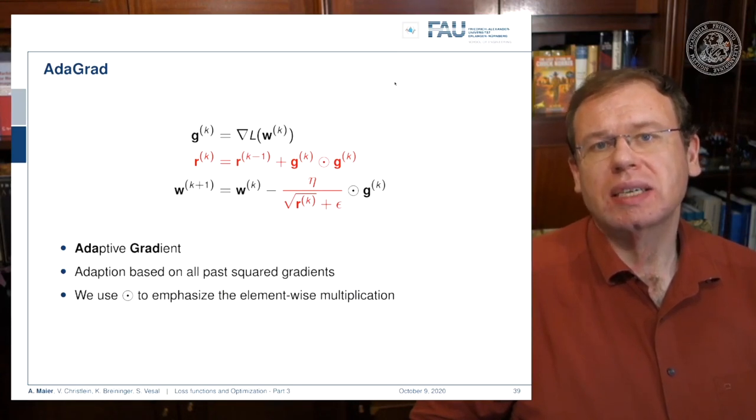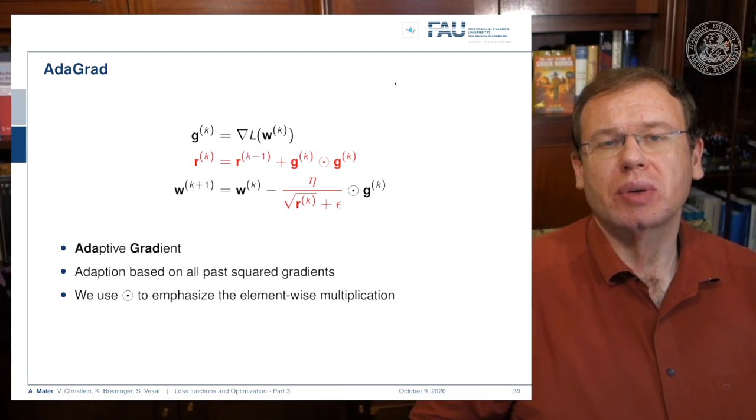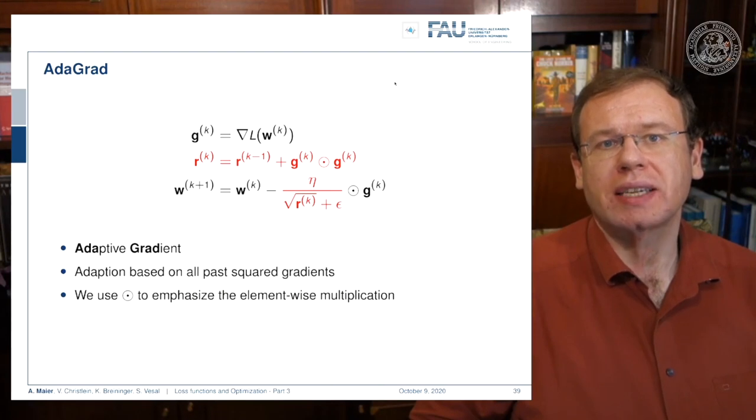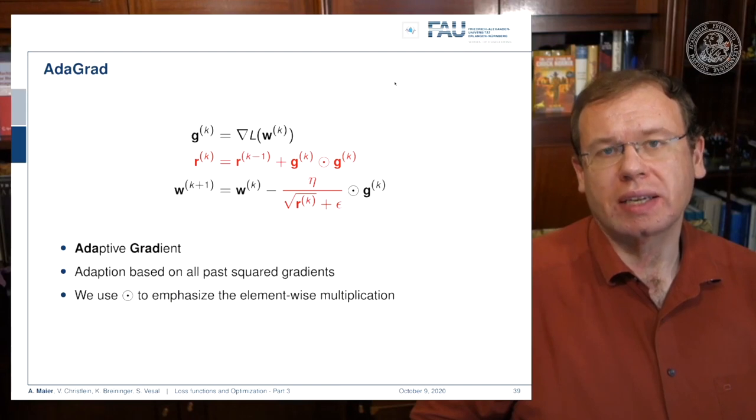This can be done with the so-called AdaGrad method. This is using first the gradient to compute some g superscript k, and then it's computing the product of the gradient with itself to keep track of its element-wise variance in a variable r. Now we use our g and our r element-wise in combination with eta to weigh the update of the gradient.